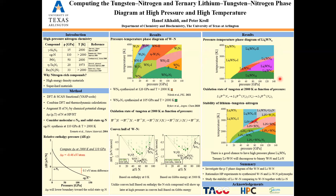We wanted to study the stability of the ternary system compared to a combination of the binary systems. So I gathered all the possible ternary systems with combinations of tungsten nitrogen and lithium nitrogen. We can see that in a diamond anvil cell at pressures above 60 gigapascals and temperatures above 2,000 Kelvin, there is a good chance to stabilize the ternary Li6WN4. However, most of the other ternary systems will decompose into a combination of binary tungsten nitrogen and lithium nitrogen.